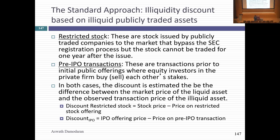The second source is pre-IPO studies: a private company is going to go public in three months, and in those months there are transactions between VCs and founders. If you can observe what they paid and compare it to the IPO price, in theory you can argue that discount reflects illiquidity. Both approaches have a fundamental sampling bias problem.